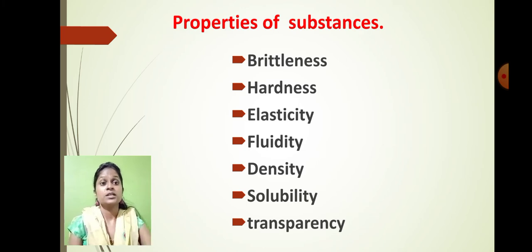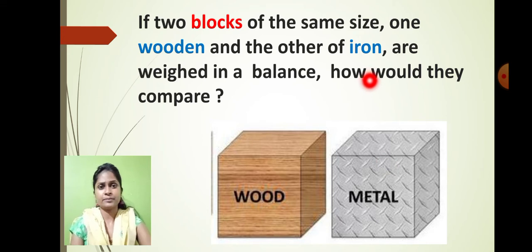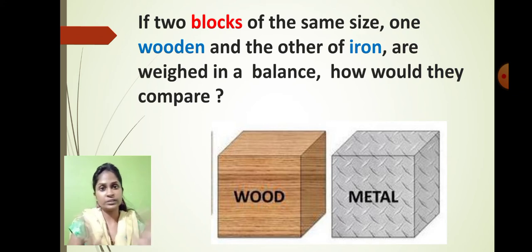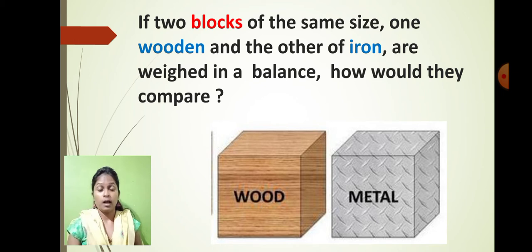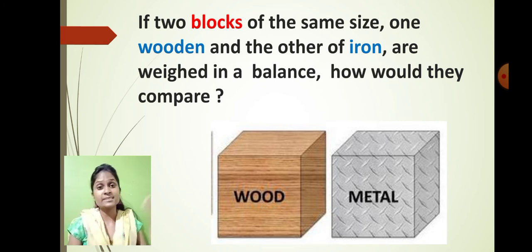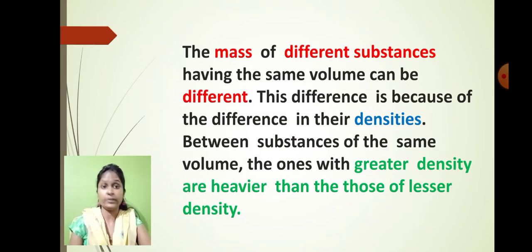Let us see these one by one. We have taken two blocks — one is a wooden block and the second is a metal block, an iron block. Now we are going to compare this wooden block with this iron block. Can you tell me — you can see in this image that the wooden block and the metal block are of the same size, the same shape, and the same volume. But still, although they have the same shape and volume, which block will be heavier? Yes, absolutely — your guess is right. The metal or iron block will be heavier as compared to the wooden block.